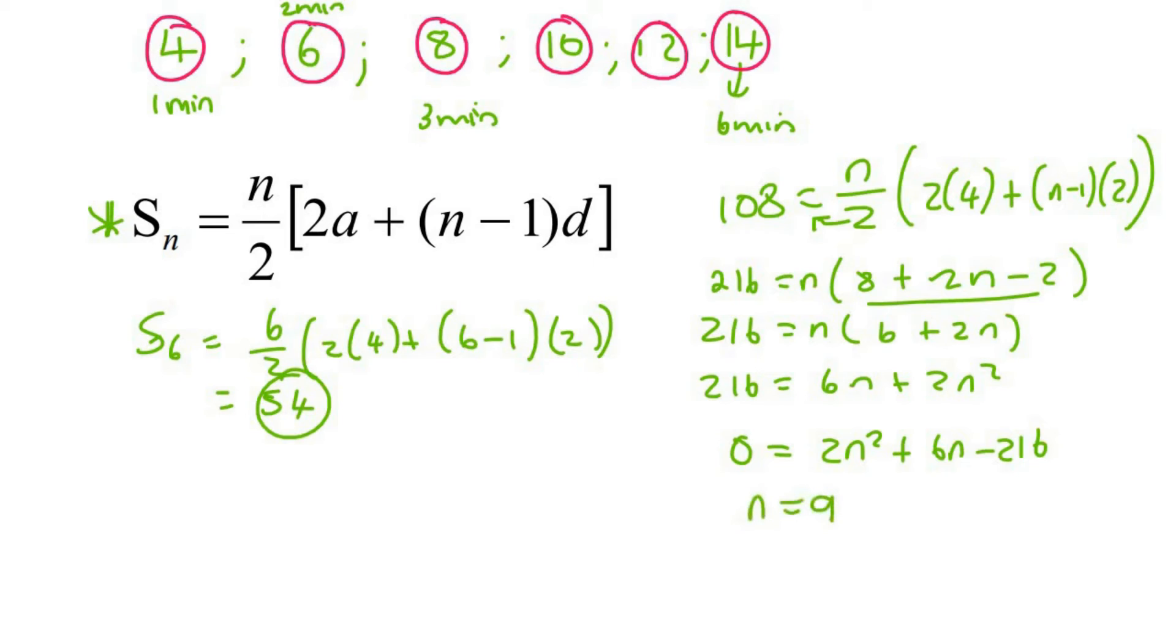It would be nine, or N would be negative 12. Now you can't have a negative number as your position or as your minutes, so this one will be no solution. And so the answer is going to be nine minutes. That's how long it will take to fill up this entire cinema.